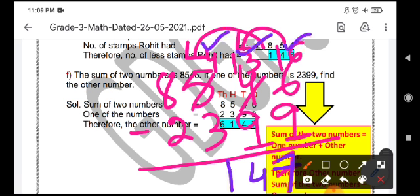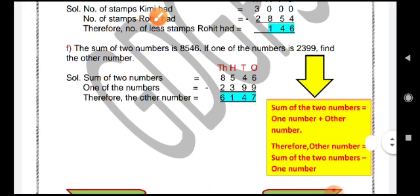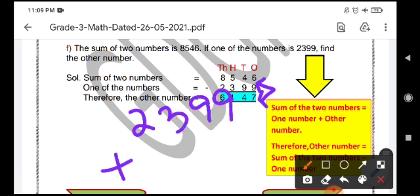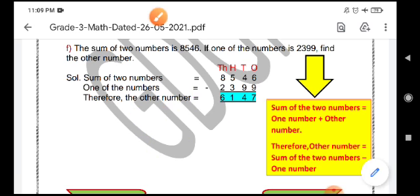8 minus 2 is 6. We are done with the subtraction. We got 6147. See here. Now, check it. You are going to write the subtrahend that is 2399. And you are going to add the difference that you got. Give me one second.